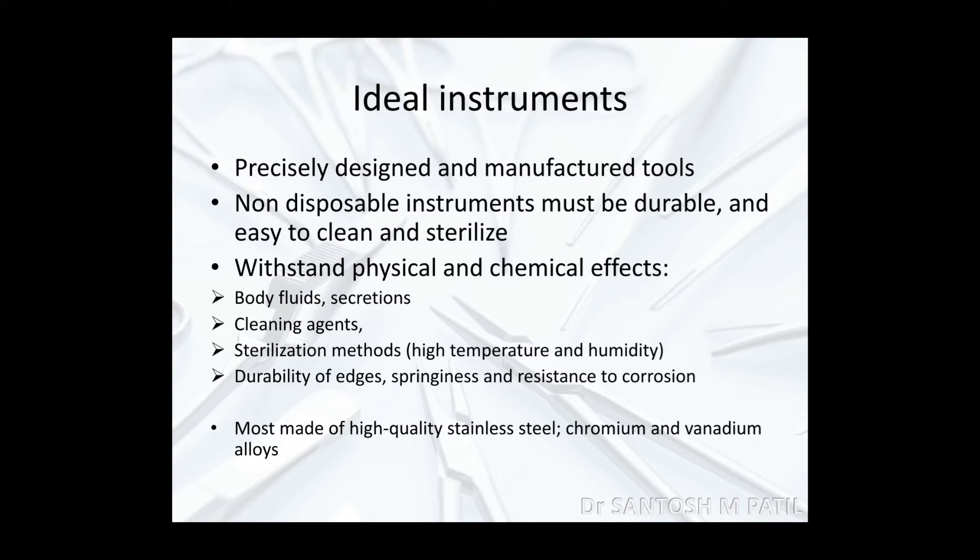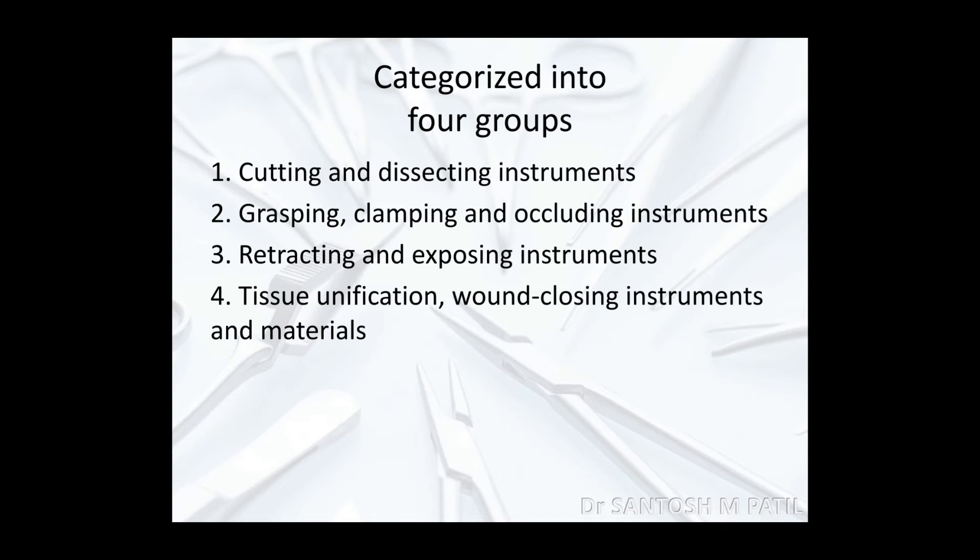Most instruments are made up of high quality stainless steel, chromium and vanadium alloys. For easy understanding, surgical instruments are categorized into four groups: one, cutting and dissecting instruments; two, grasping, clamping and occluding instruments; three, retracting and exposing instruments; and four, tissue unification or wound closing instruments. Cutting and dissecting instruments are usually sharp instruments like blades and scissors; grasping instruments are used to hold tissues; and retracting instruments are what we call retractors.